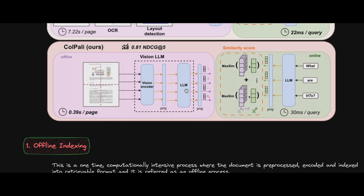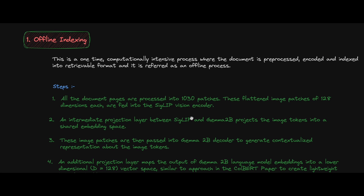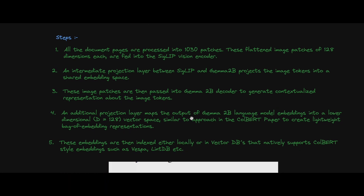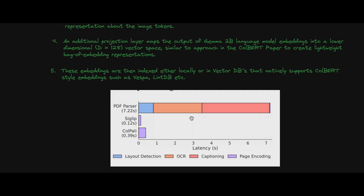An intermediate projection layer between SigLIP and the LLM converts image patches into tokens. These image patches are passed into the Gemma 2 billion decoder to generate contextual representations of the image tokens. The projection layer outputs embeddings in a lower dimension — 128-vector space — similar to the ColBERT paper's lightweight bag-of-embeddings approach. These embeddings are then indexed locally or in a vector database.